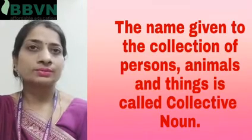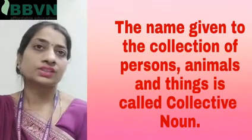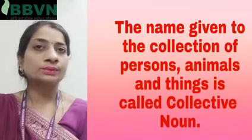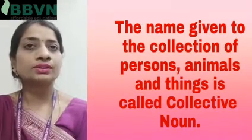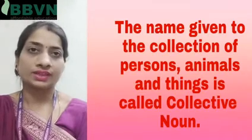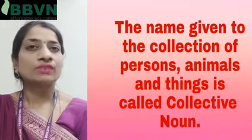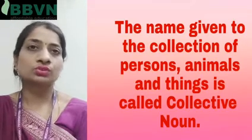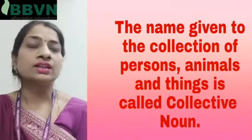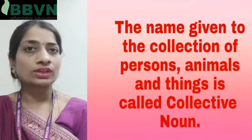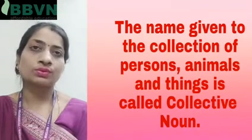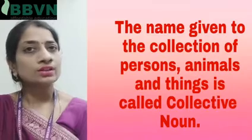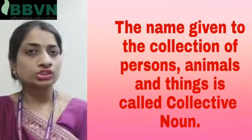For example, when a lot of people gather at one place, we say there is a 'bheed' — a crowd. So a name has been given to that gathering. Similarly in English, there are many terms given to different groups of people, animals, or collections of things.